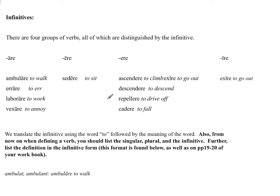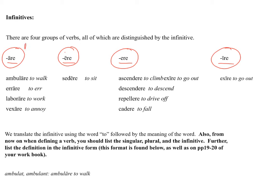Today we're talking about infinitives. In Latin, infinitives are going to be part of one of four families. The first conjugation is A-R-E. The second conjugation is long E-R-E — that's what the macron is signifying — a long E-R-E. Without the macron, we're dealing with the third conjugation, and I-R-E is the fourth conjugation. All of our verbs are going to be a part of one of these conjugations.